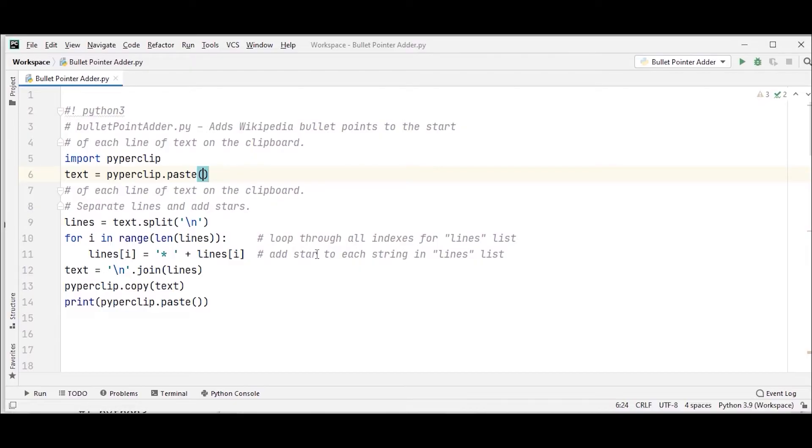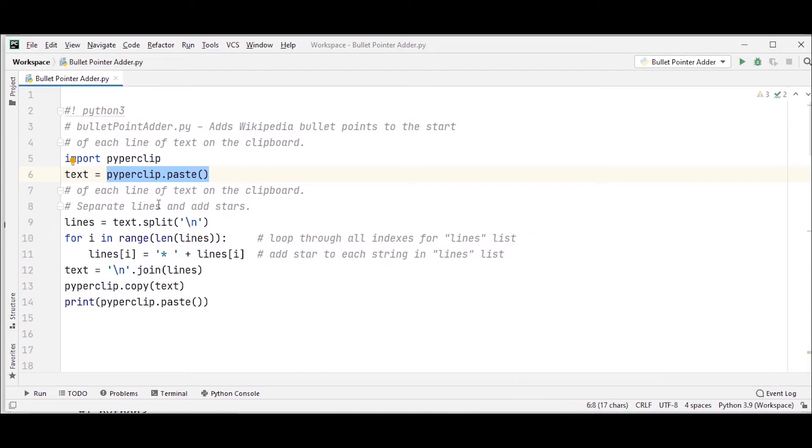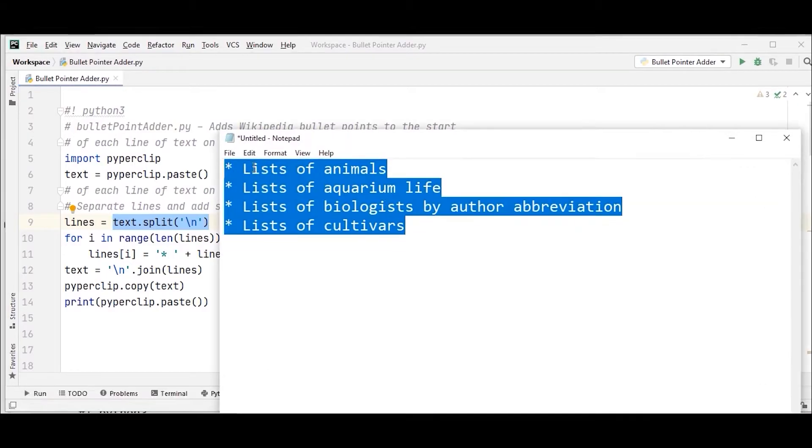You can see that I have already written the program for you. What I am doing here is, I am importing the pyperclip module and then I am taking a text variable where I am doing pyperclip.paste. What it does is, it copies this text here from my notepad to this text variable. After that, I am taking a next variable which is lines and I am splitting the new line characters. So, what it will do is, it will split the new lines and everything here will be in a single line so that I can do the manipulations here.